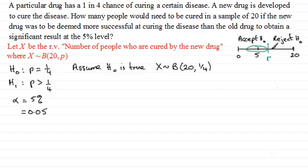Now I'm going to reject the null hypothesis if I find that the probability of x, that's the number of people who are cured, is greater than or equal to this critical value r. And the probability of that happening is less than or equal to the significance level of 5% which as a decimal is 0.05.